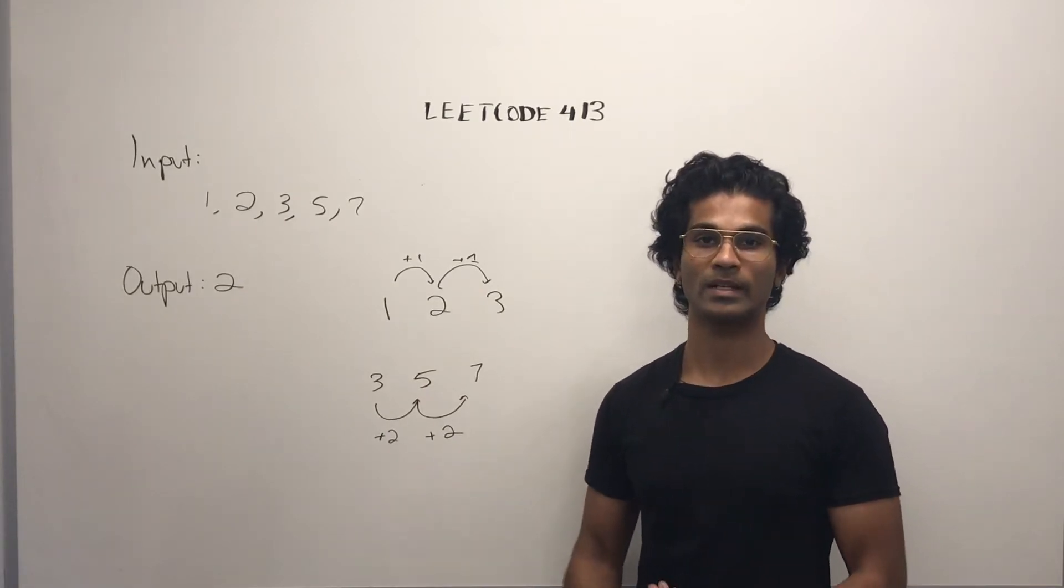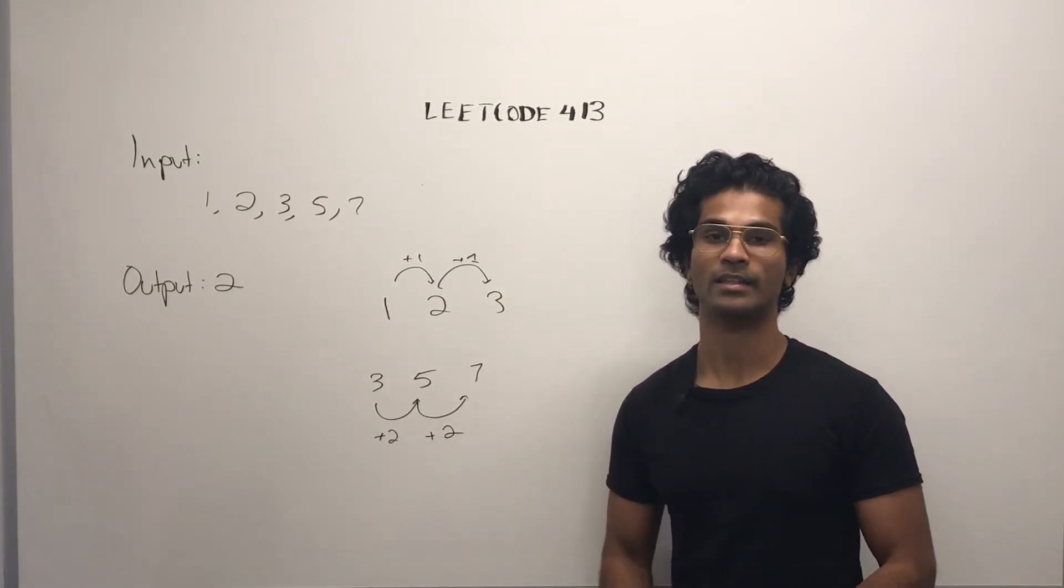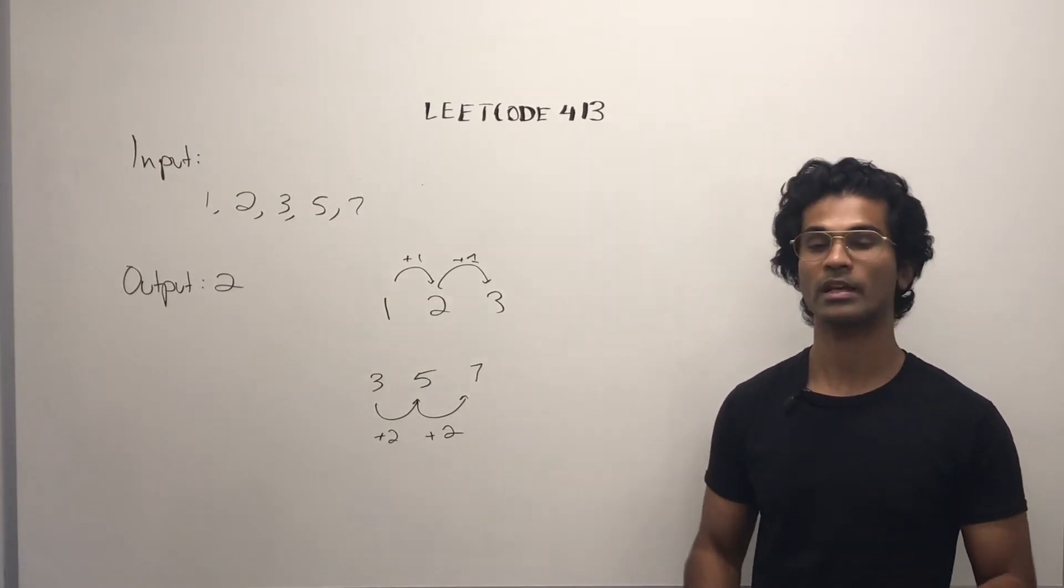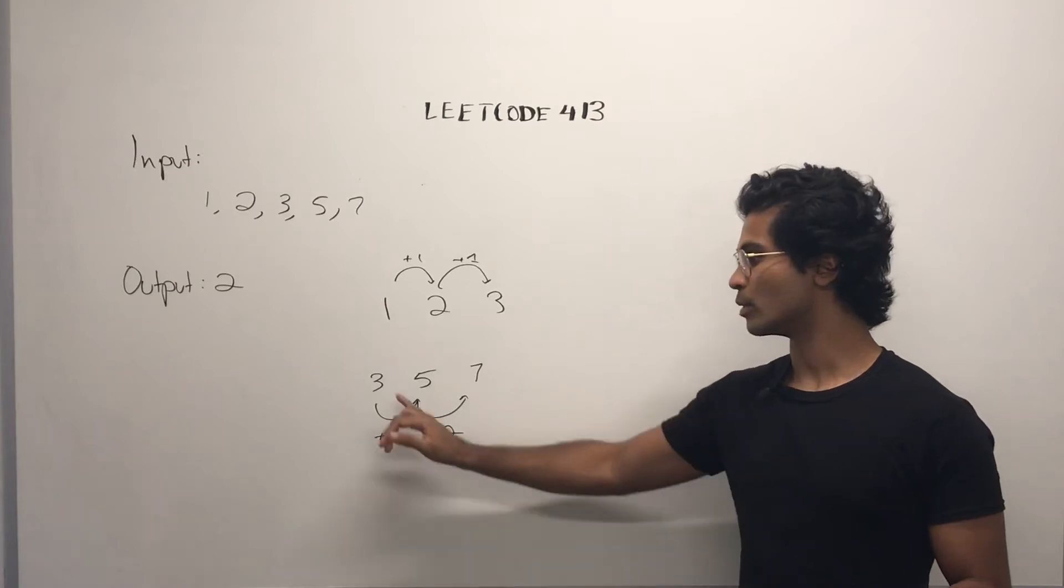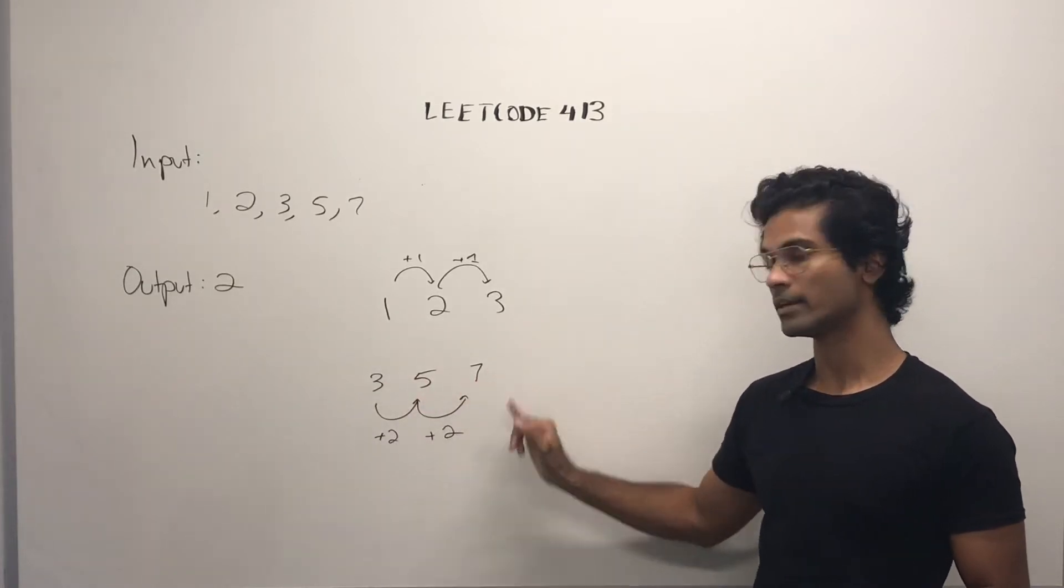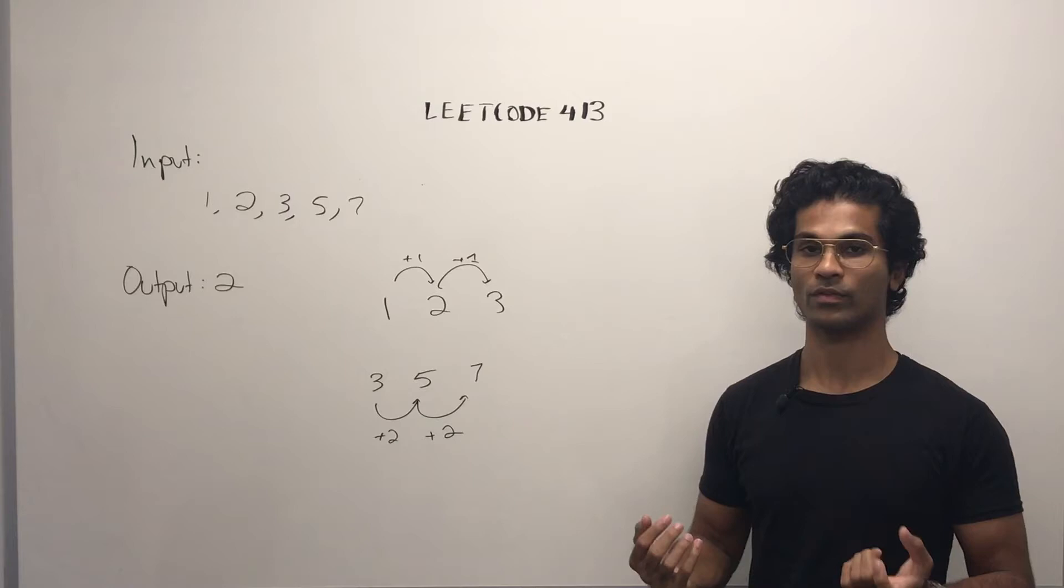Now, a valid arithmetic slice has to be at least three numbers in a sequence. It could be more. So if there was a 9 at the end, we could have that, and we would just go 3, 5, 7, 9.